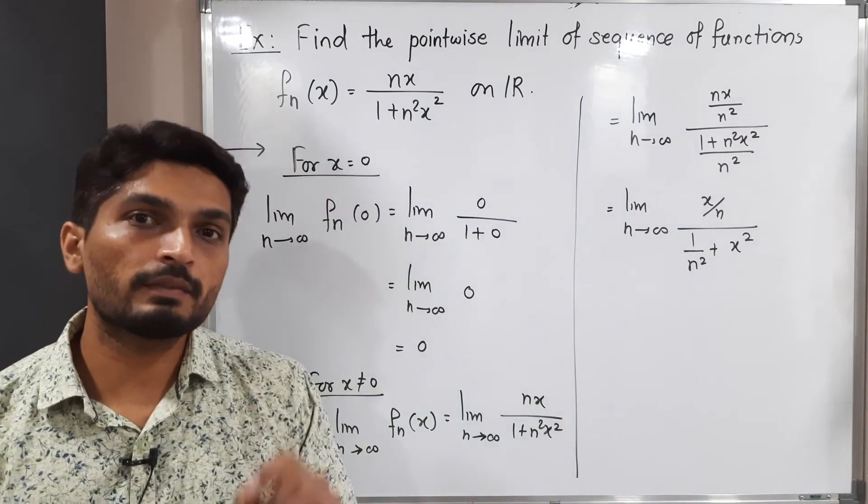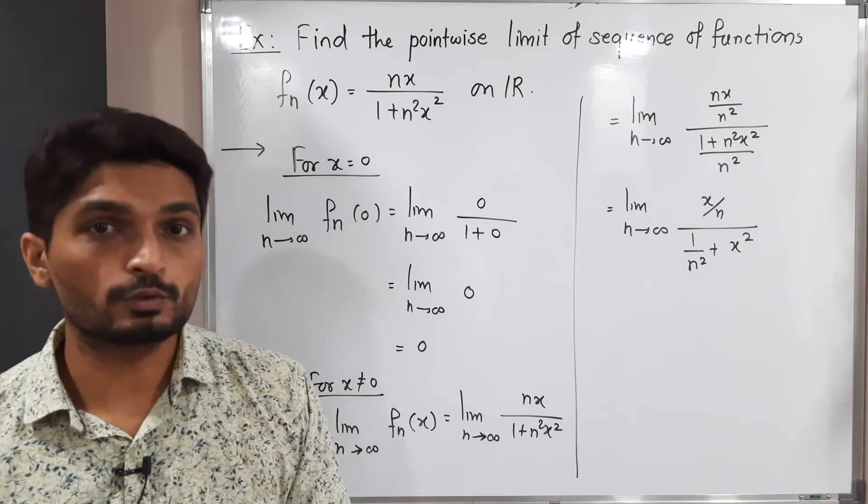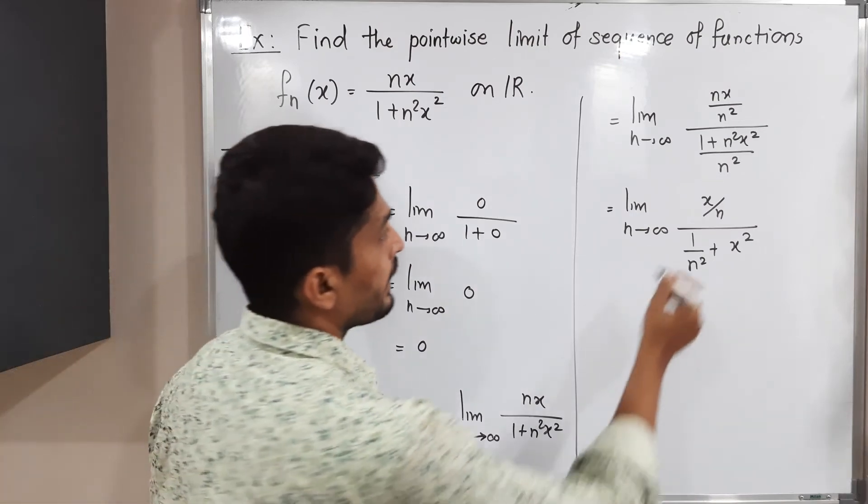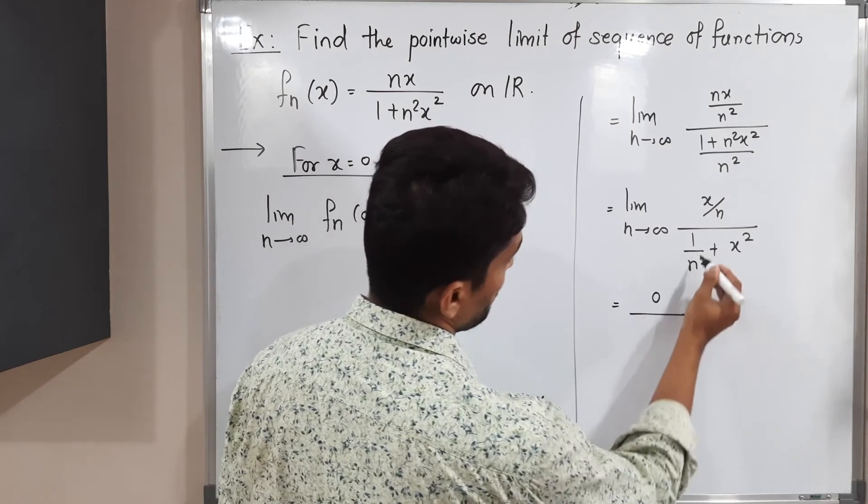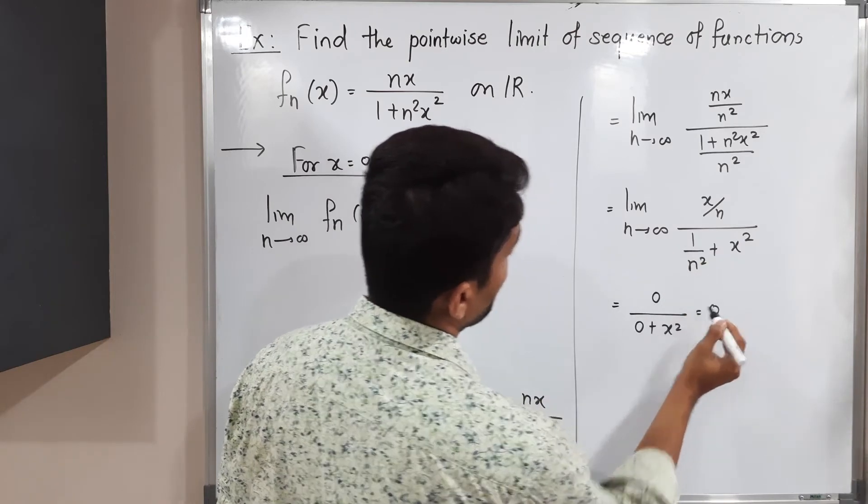Let us apply the limit now. When we have 1/n and we are taking limit as n tends to infinity, the value will be 0. So we are having 1/n here, so its value will be 0 applying the limit. Here also 0 plus x². That means what is its value? Zero.